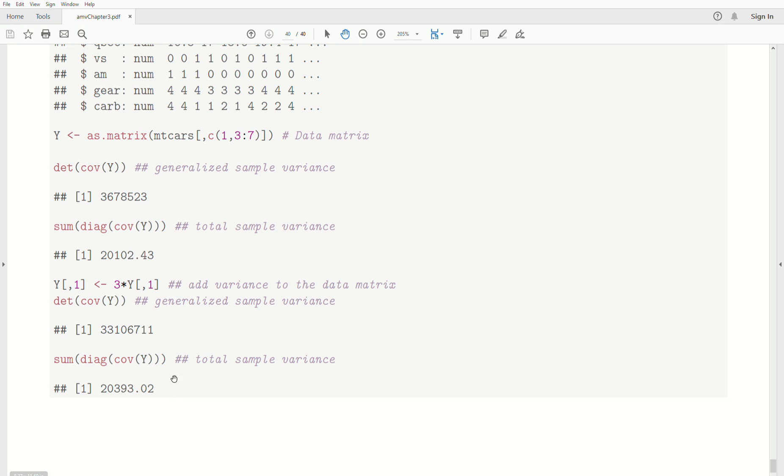The total sample variance, which is the trace of the covariance matrix, is 20,393, which is bigger than our previous one.